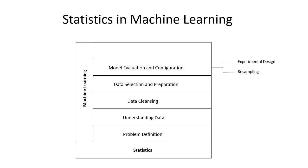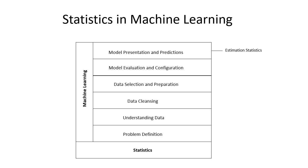Statistical hypothesis tests are methods that quantify the likelihood of observing a result given an assumption about the result. Estimation statistics are methods that quantify the uncertainty of the result using confidence intervals. The process of selecting one method as a solution is called model selection, involving careful interpretation of the estimated skill of methods evaluated for the problem. Finally, when making predictions on new data, it's important to quantify the confidence of the prediction using prediction intervals.